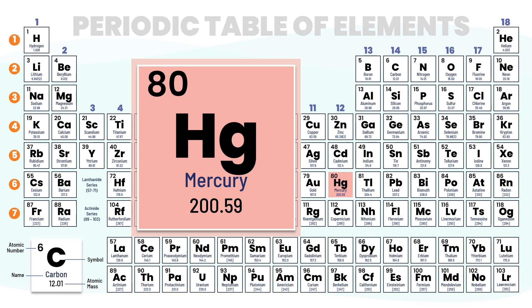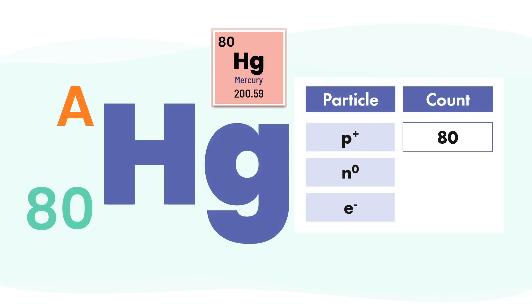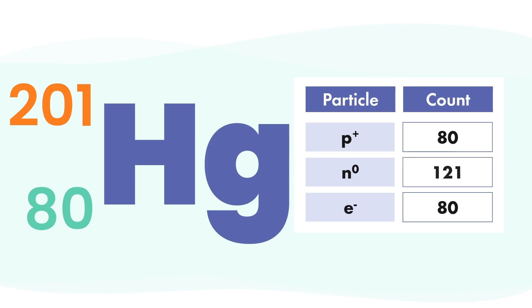Looking it up, mercury has an atomic number of 80. That means it has 80 protons. And since it's neutral, it also has 80 electrons. Mercury's atomic mass is around 200.59, so we round it to 201 to get the mass number. Now subtract: 201 minus 80 gives us 121 neutrons. Not bad, right? You've just decoded mercury without breaking a sweat.